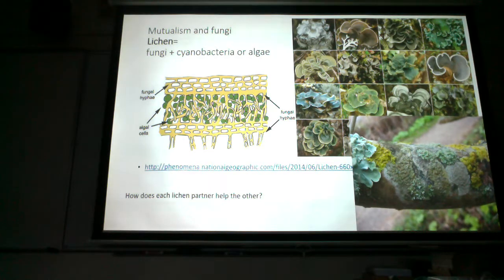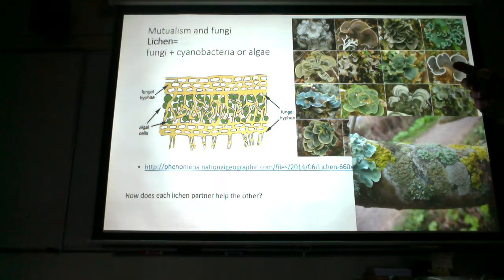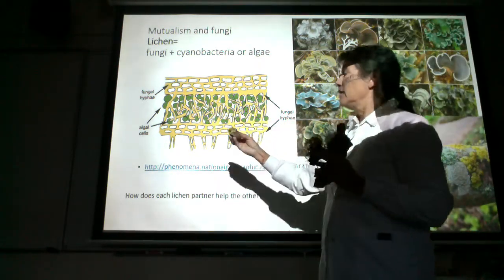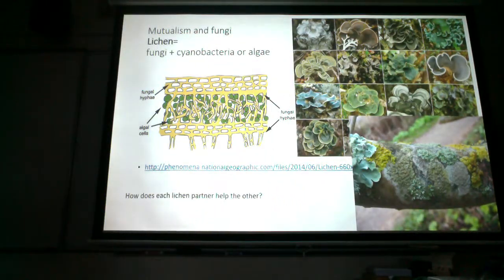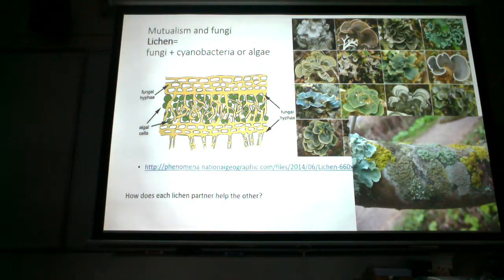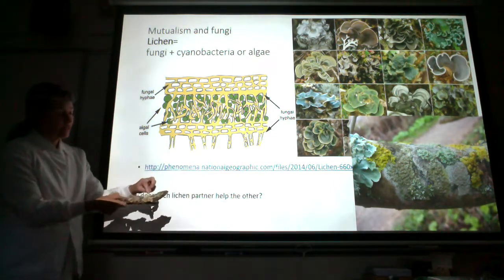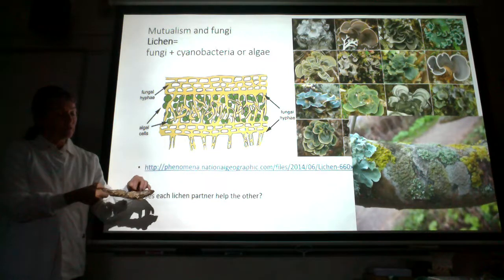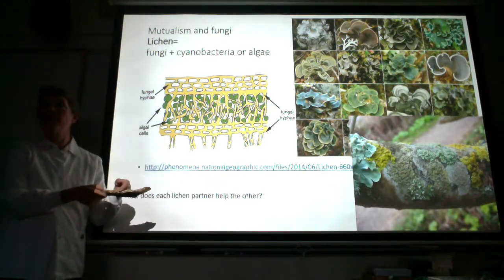There are three types of lichens. The first is crustose lichen — these grow as a crust tightly adhered to the surface of a rock, branch, or log. The second type is foliose — one side is attached to the surface, like bark, and the other side is loose, like a little leaf. The third type is fruticose, which grows as a little bush.